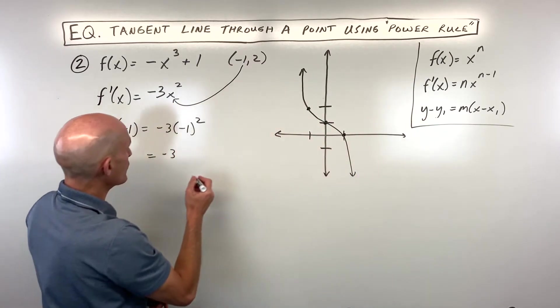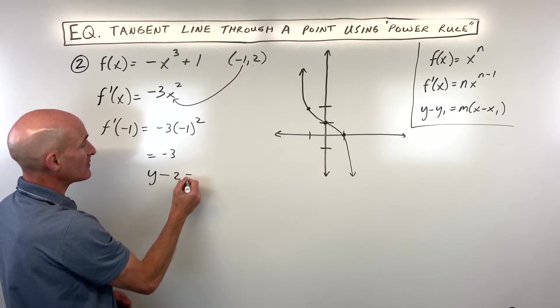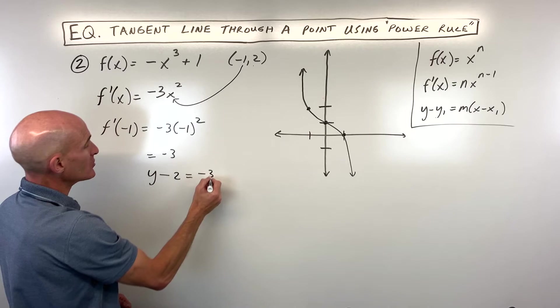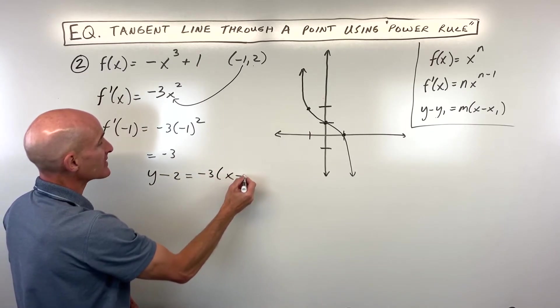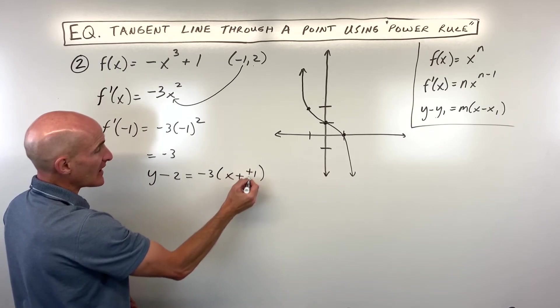Using our point-slope form, we're going to say y minus our y-coordinate of our point equals our slope, which is negative 3, times x minus our x-coordinate of our point. When you subtract, it's like adding the opposite.